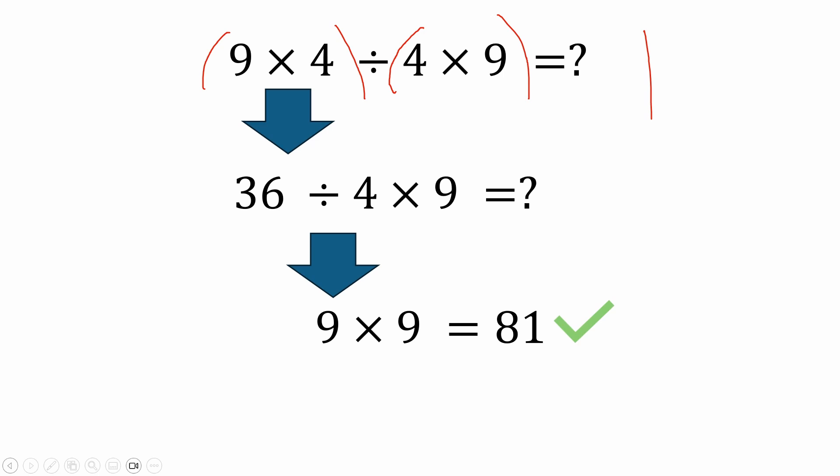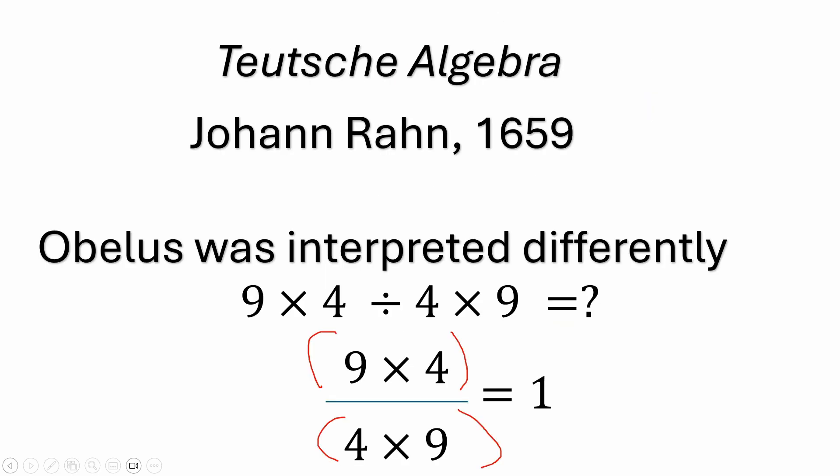I just wanted to throw that out there for some food for thought. You will see this type of problem listed online with people making arguments for why the answer could be 81 or 1. Some people interpret things for the wrong reasons — for example, they're confused thinking multiplication comes before division, or division before multiplication, just because of the order of the six letters in BODMAS or PEMDAS. So a lot of people may end up with 81 or 1 but for the wrong reasons.